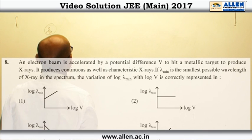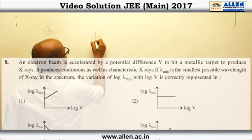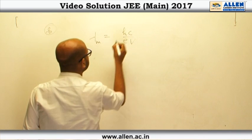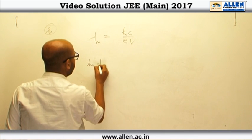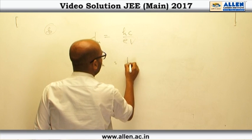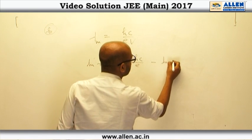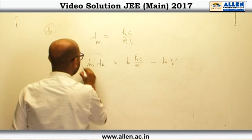In question number 8, they have talked about the continuous x-ray at the minimum wavelength lambda min is equal to hc by eV. If you take the log of both sides, log lambda m is equal to log hc by e minus log V.